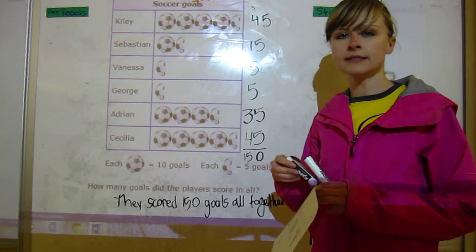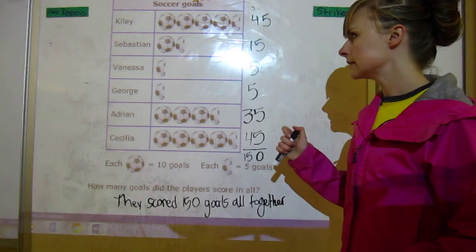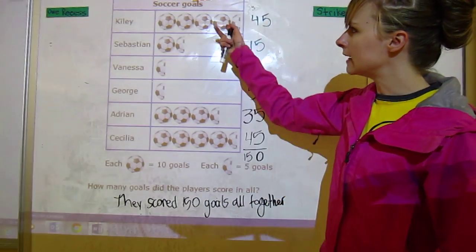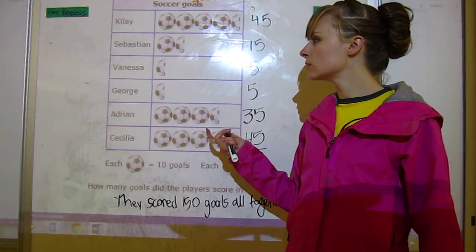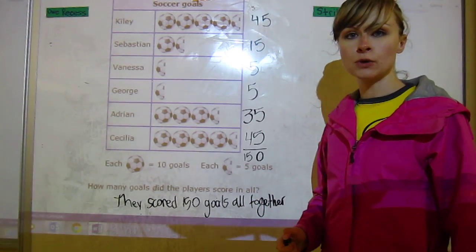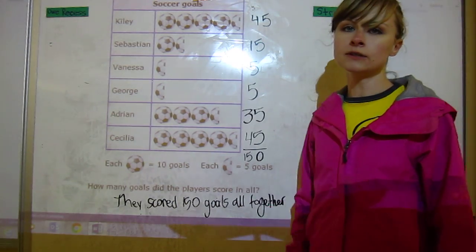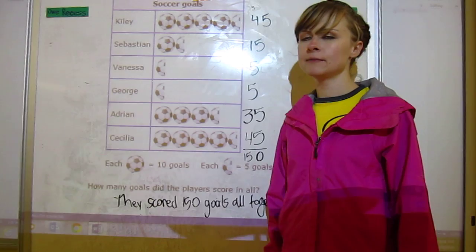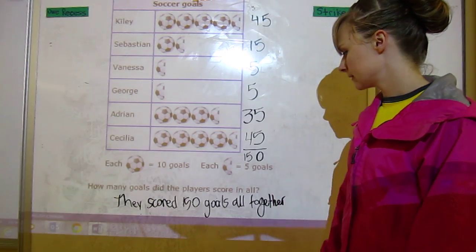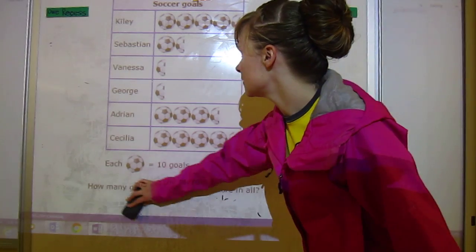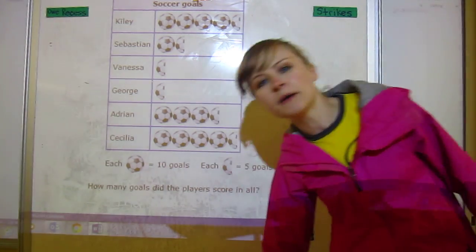Other things that we could talk about in this graph would be who scored the most goals, which would be Cecilia and Kylie. Who scored the least goals? Vanessa and George. You could do how many goals did girls score or boys based on the name, you could figure it out. So that's that one. Now if we go below, we'll look at a bar graph.